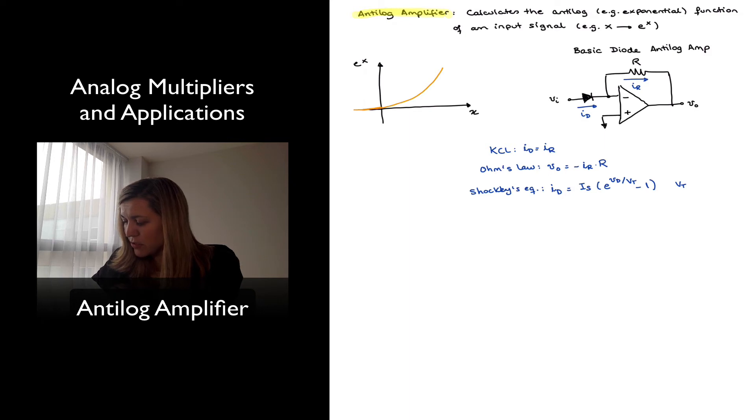and Vt is very small, around 25 millivolts at room temperature, then the exponential term in that equation is going to be much greater than 1, so I can approximate Id as being approximately equal to Is times e to the Vd divided by Vt.